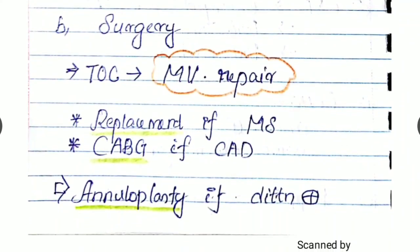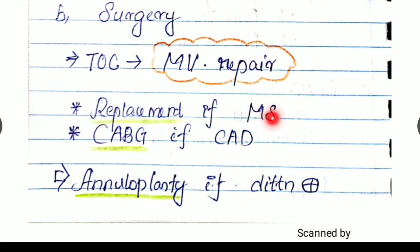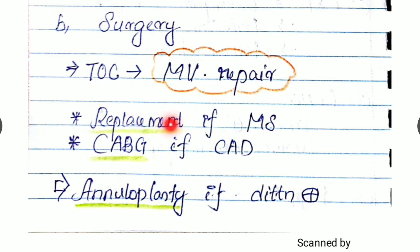But the treatment of choice being surgery, that is mitral valve repair, not replacement. It is mitral valve repair. But if there is any associated mitral stenosis, we have to do replacement. It can be a bioprosthetic valve or mechanical valve. Each one has its own merits and demerits. Bioprosthetic valve may not require anticoagulation, but mechanical valves do require lifelong anticoagulants. But mechanical valves last much longer.